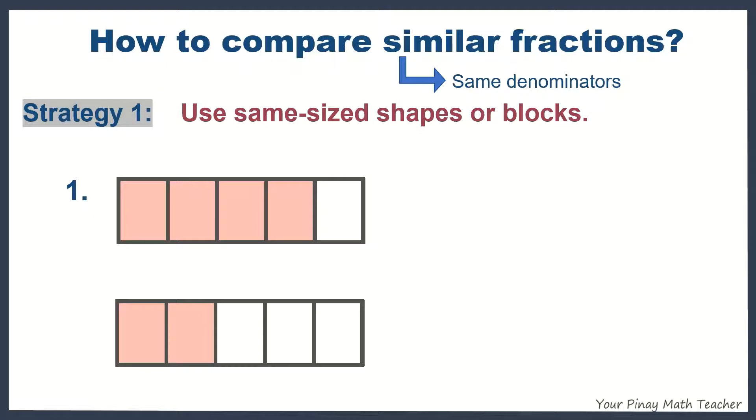obviously, we can say that the first figure has the greater shaded part. So, if we were to name the fraction for the first figure, it is four-fifths and two-fifths for the second. Obviously, basing on the shaded part, we can say that four-fifths is greater than two-fifths.